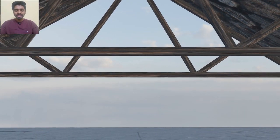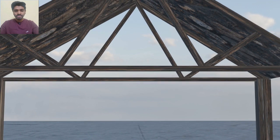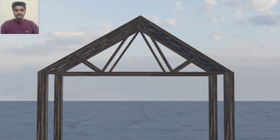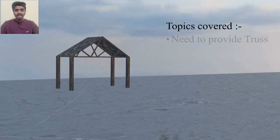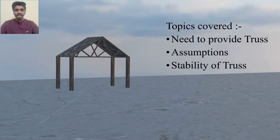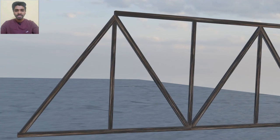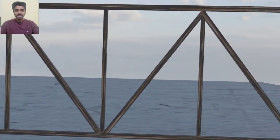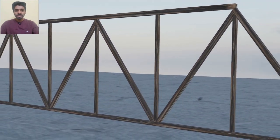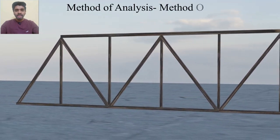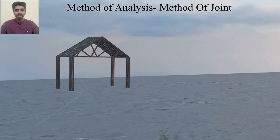Hello everyone, welcome back to my channel Step by Step. In the previous video we saw the basics of trust structures — what is the need to provide truss structures, what are the assumptions we have to follow while analyzing the truss structure, and the stability of trusses. Today we are going to discuss the methods used to analyze truss structures. The first method we are going to discuss is the method of joints, and in the next video we will see the method of sections and zero member forces.